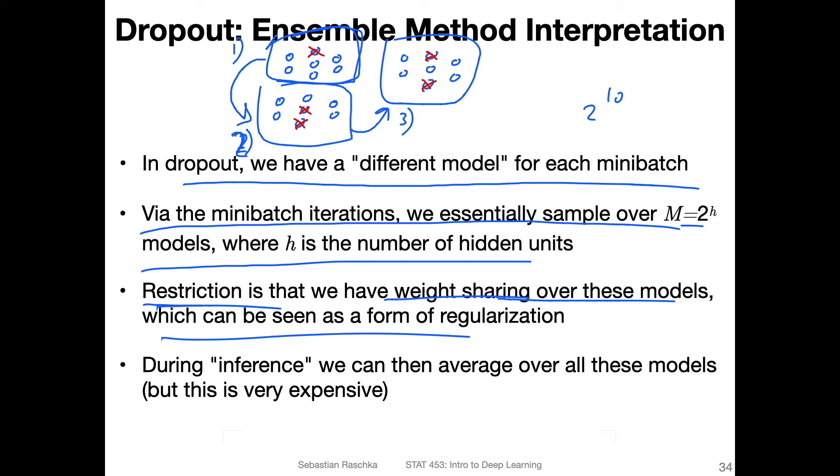And still, we have, while we have this weight sharing during training, we could technically create all these different models after training during inference and then average over all these models. There's nothing that prevents us from doing that. The only problem with that is if we even only consider a small case with 2^10 combinations, this is like a very large combination of models.